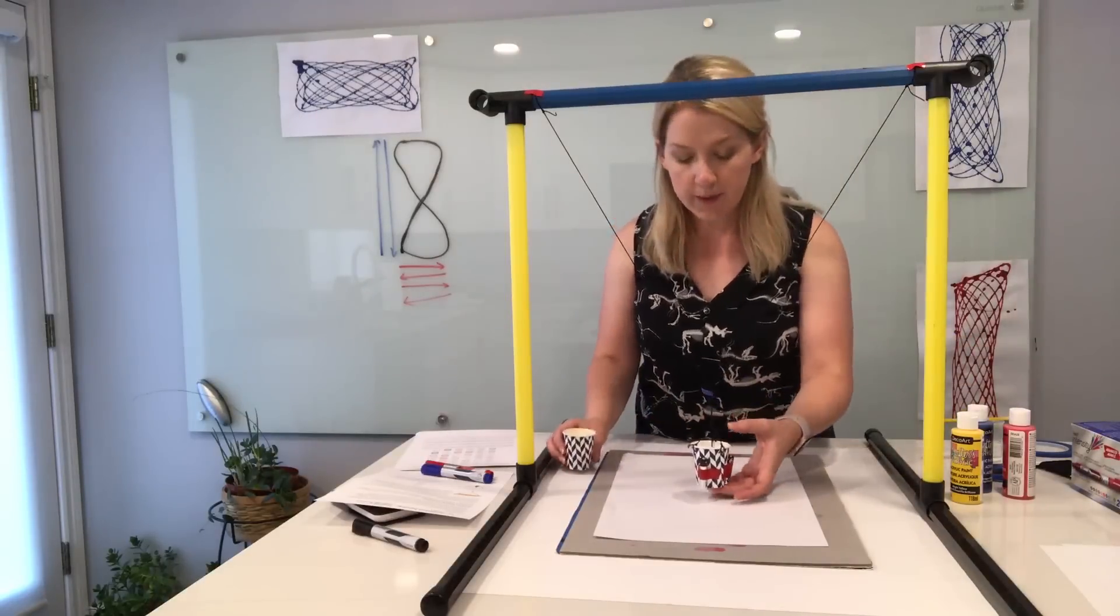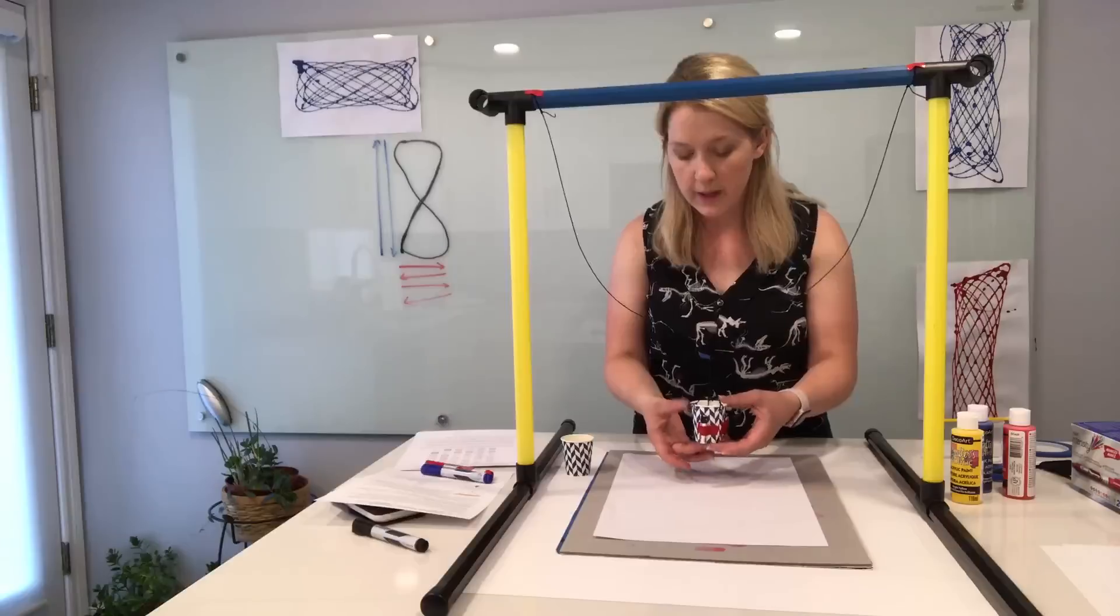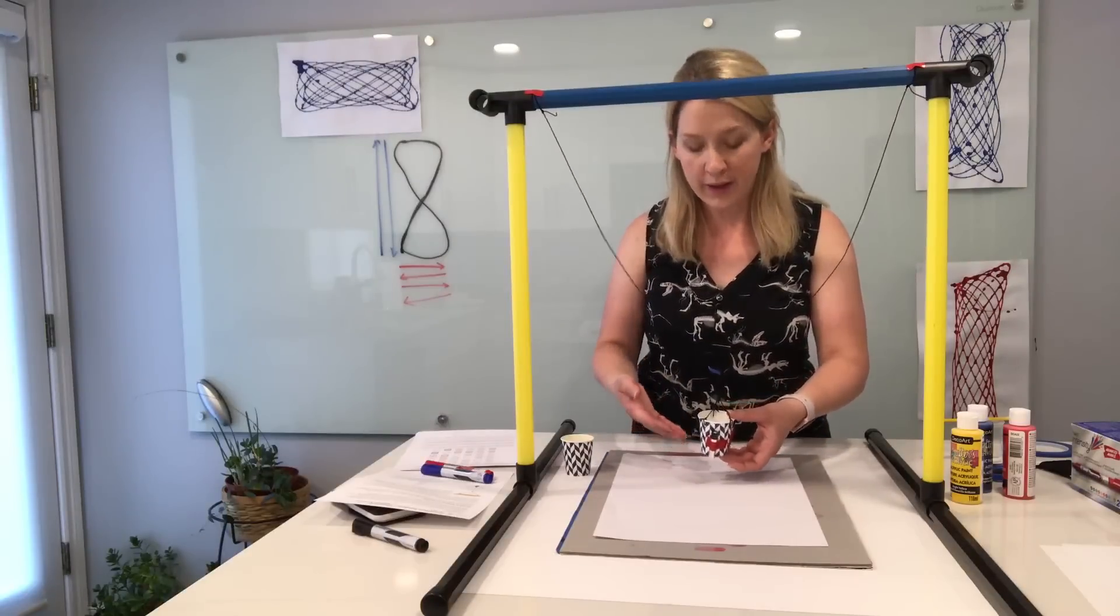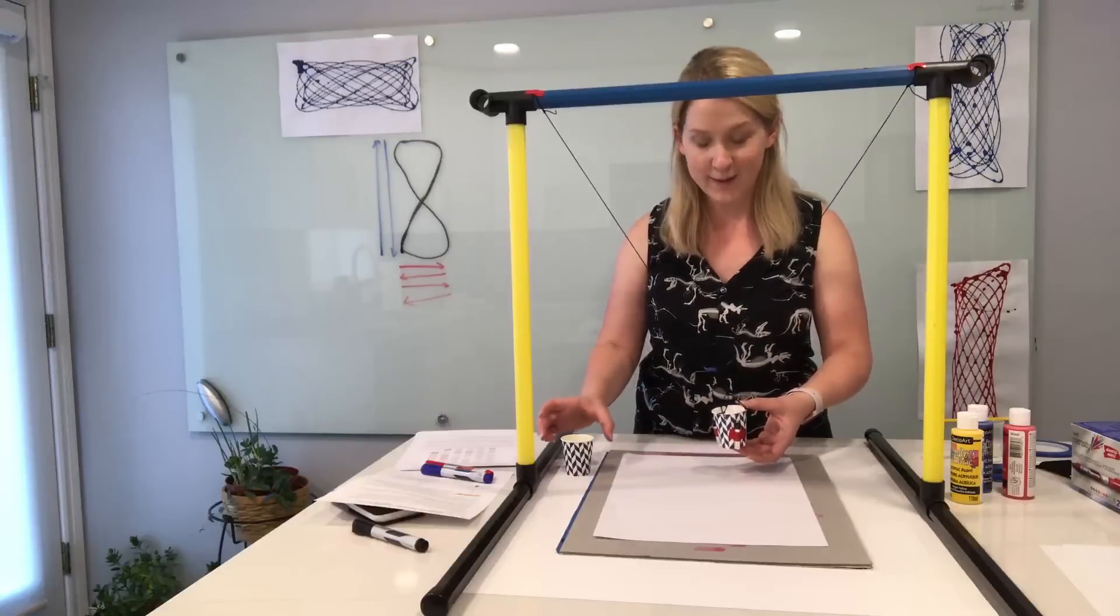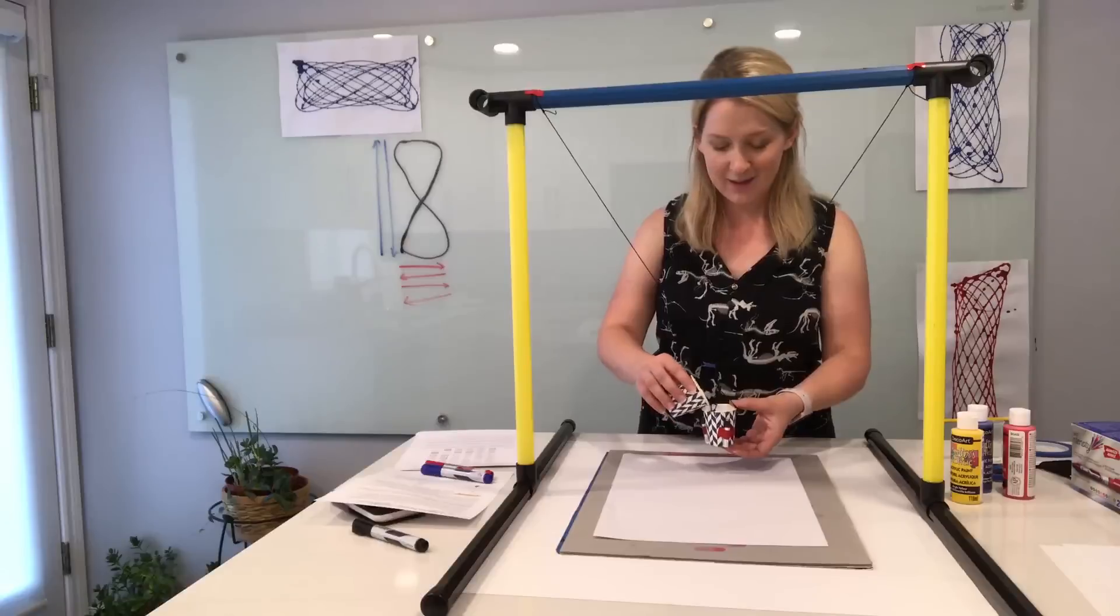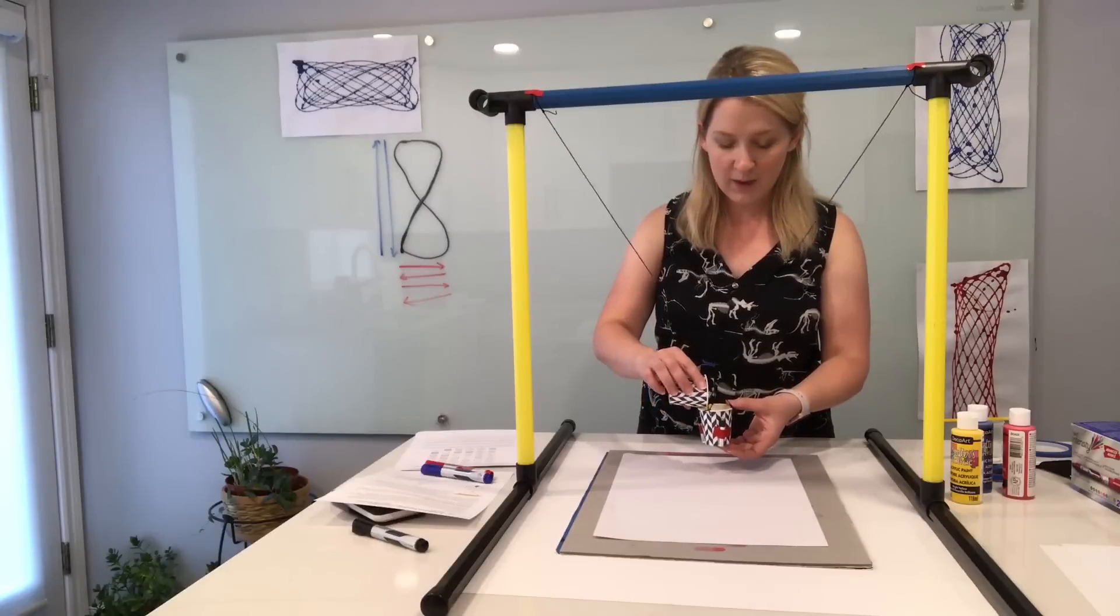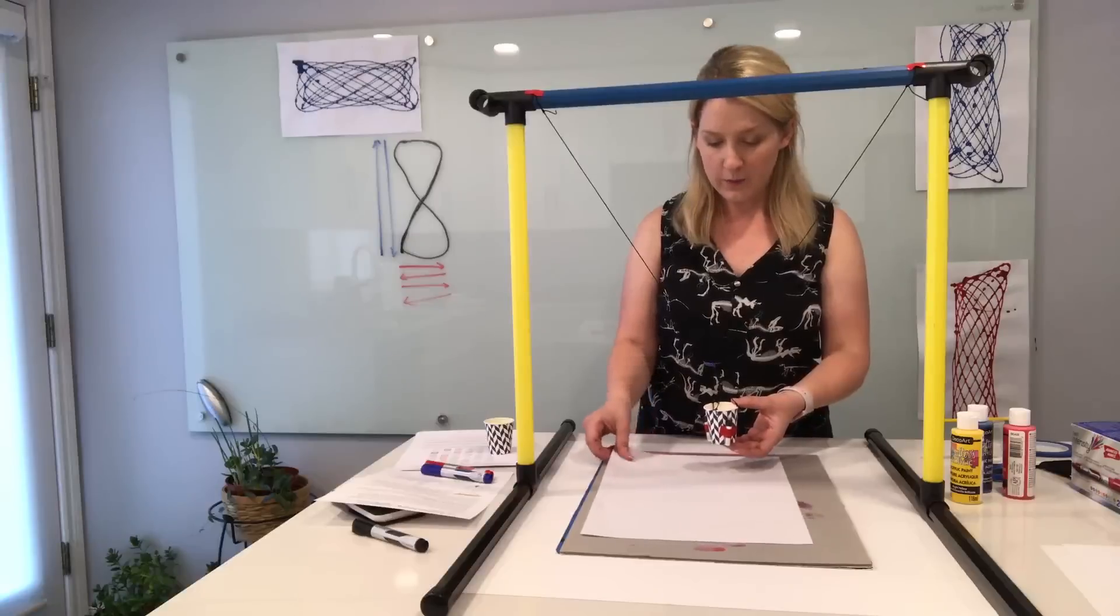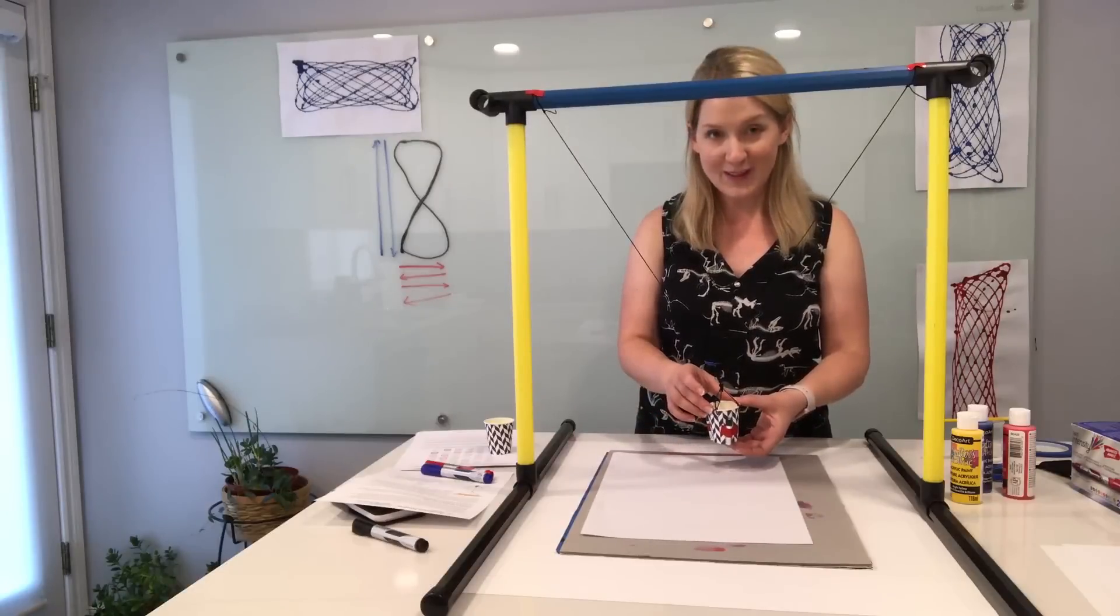So I'm going to pour this into my cup. Now you can use tape on the bottom, you can put your finger at the bottom, or you can have another cup under that to catch any rogue paint that's coming out. I'm going to try this one and hope for the best. I'm just using my finger.